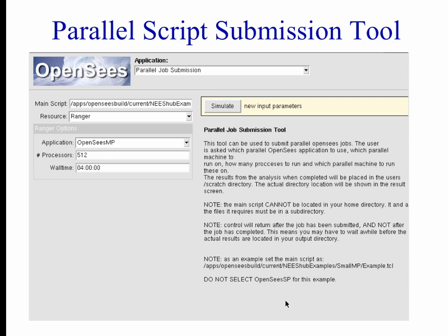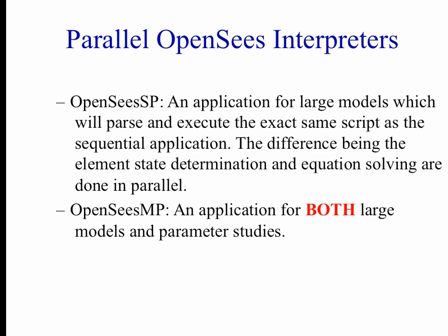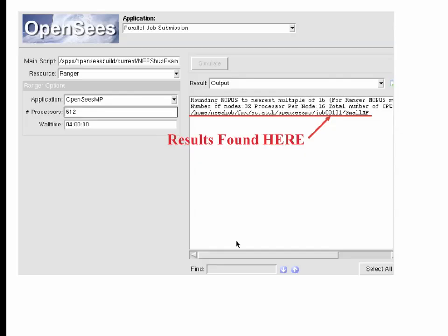That's the OpenSees parallel submission tool — you select the tool and then select the application. We'll talk more about these applications tomorrow. There are two parallel applications: OpenSees SP and OpenSees MP. SP is for large models, and MP is for large models and parameter studies.